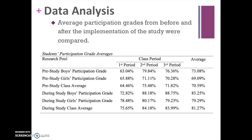Looking at the data, there is a clear difference. Besides first period, in both second and third period classes there is usually a 6% to 7% gap in participation grades between girls and boys — it's interesting to note a clear divide in the grades earned, both before and during the participation policy. There is a clear trend across boys, girls, and overall class averages: from before the study to after, there was about a 10% increase across all categories.